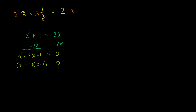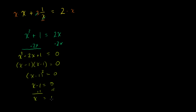We know how to solve an equation like this — we can either factor or use the quadratic formula. But this actually seems pretty straightforward to factor. Negative 1 times negative 1 is 1, and negative 1 plus negative 1 is negative 2. So this is x minus 1 times x minus 1 equals 0, which is x minus 1 squared equals 0. So we know that x minus 1 has to be equal to 0. Add 1 to both sides and we get x is equal to 1.